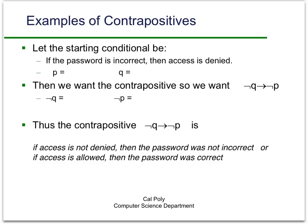To form the contrapositive, we want NOT Q implies NOT P. What is NOT Q? Since Q is 'access is denied,' NOT Q is 'access is not denied,' or equivalently, 'access is granted.' What is NOT P? Since P is 'the password is incorrect,' NOT P is 'the password is not incorrect,' or equivalently, 'the password is correct.' Thus, the contrapositive — NOT Q implies NOT P — becomes: 'If access is not denied, then the password was not incorrect.' Translating to remove the double negatives: 'If access was allowed, then the password was correct.'